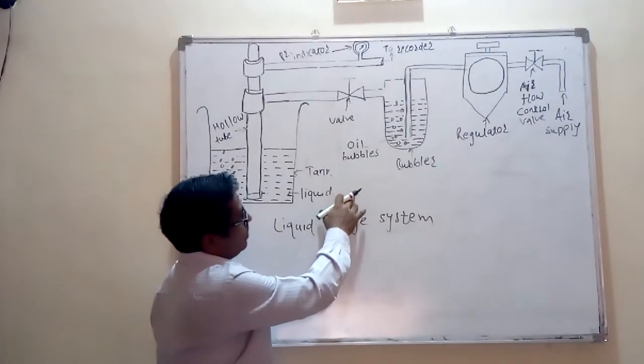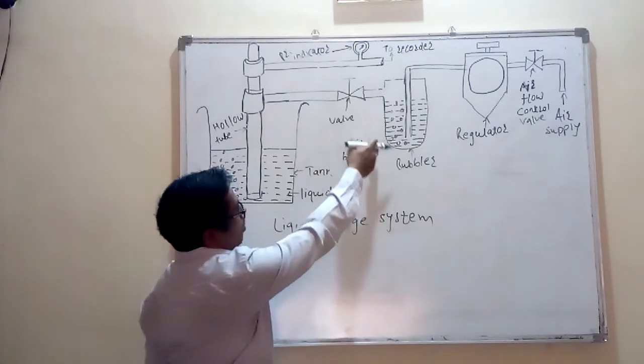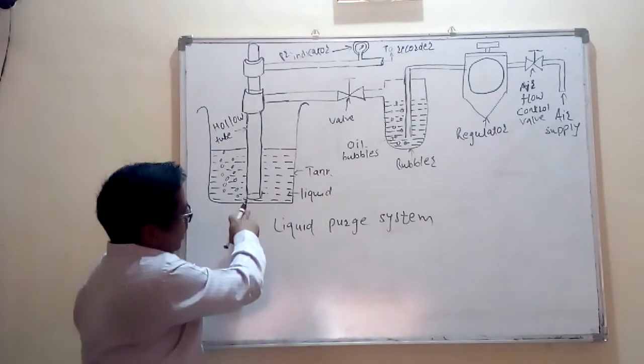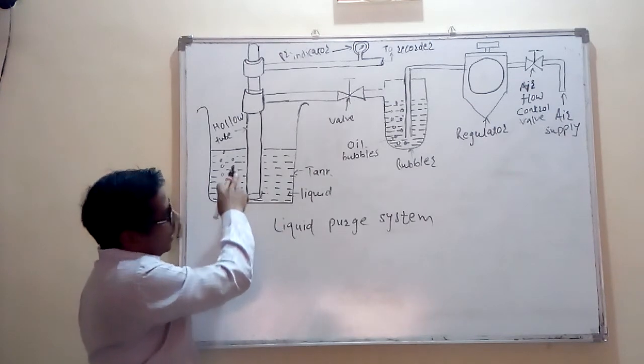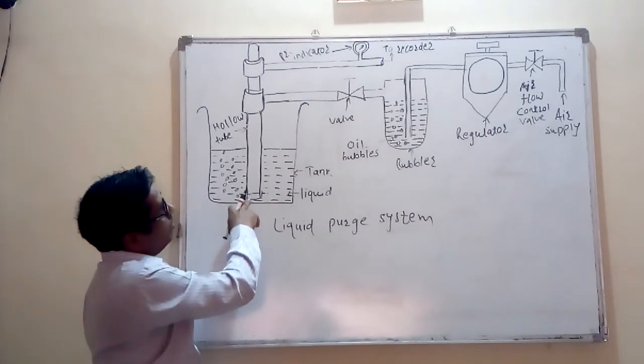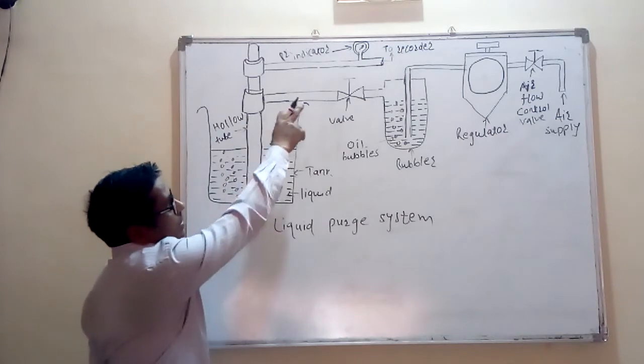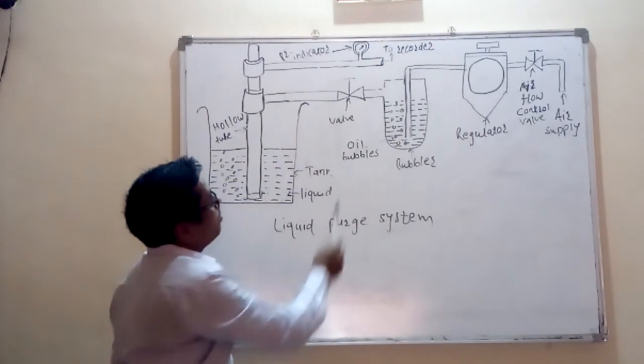What happens? Similar principle, as the oil bubbles are coming here, they are entering into this liquid. And whenever liquid level in the tank increases, due to back pressure, there is indication on this pressure gauge.